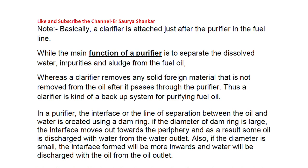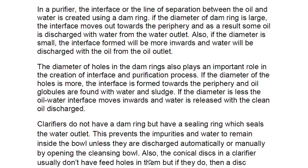In a purifier, the interface or line of separation between the oil and water is created using a dam ring — this is another name for the gravity disc. If the diameter of the dam ring is large, the interface moves outward toward the periphery, and as a result some oil is discharged with water from the water outlet. If the diameter is small, the interface forms more inward and water will be discharged with the oil from the oil outlet.